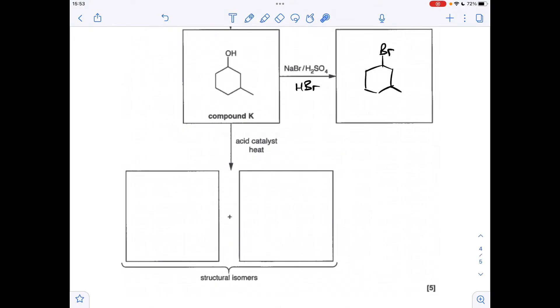Moving on to the final reaction: the acid catalyst and heat, that's going to act as a dehydrating agent and it's going to eliminate H2O from compound K. A bit like we said in the multiple choice section, we take the OH and we take an H from an adjacent carbon. We can take an H from here, I'll put a double bond there. I can take an H from here and I'll put a double bond there.